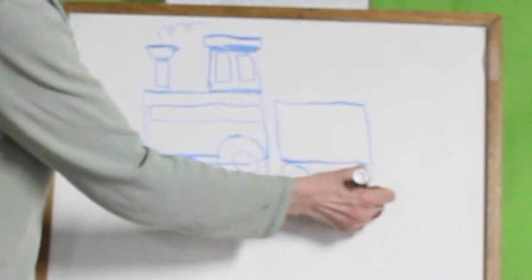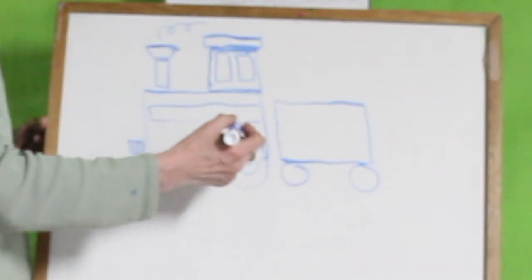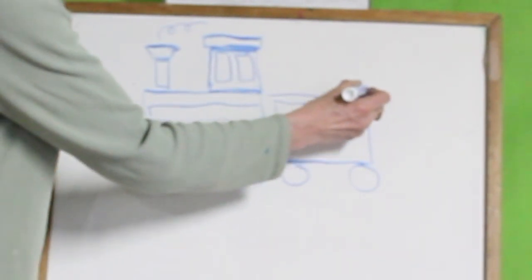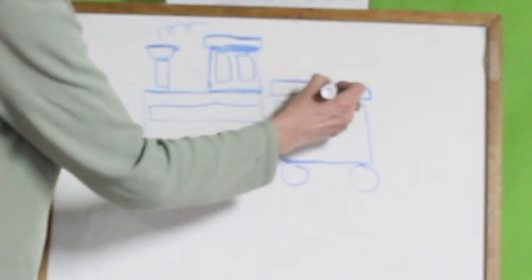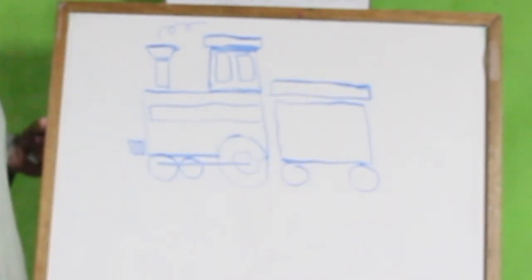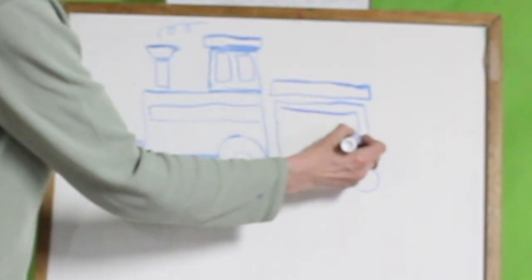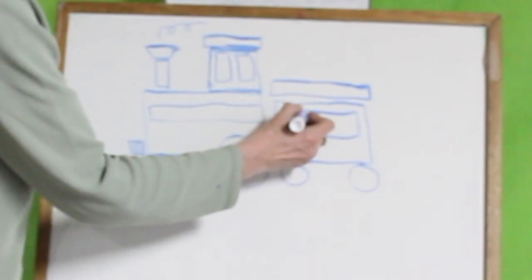I'm going to draw the wheels, and I'm going to draw the top of the car with another little rectangle. There we go.